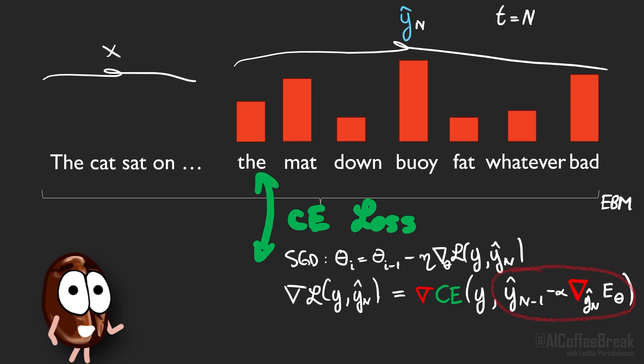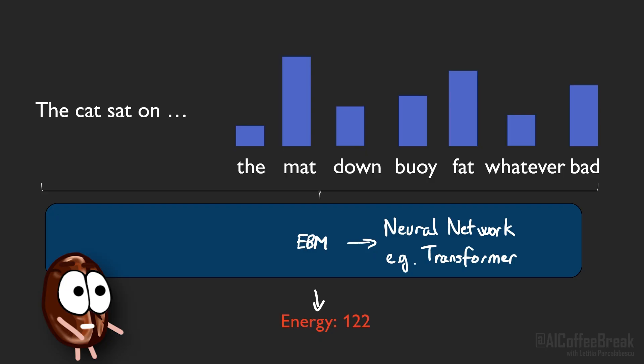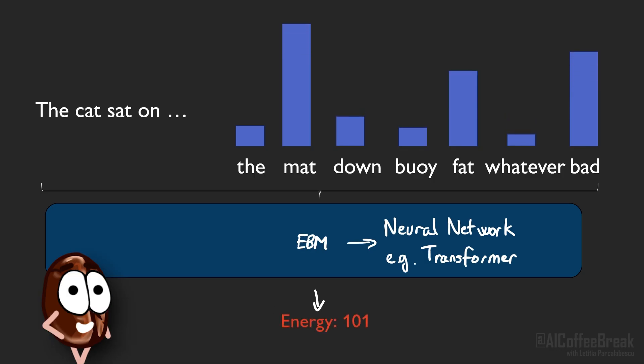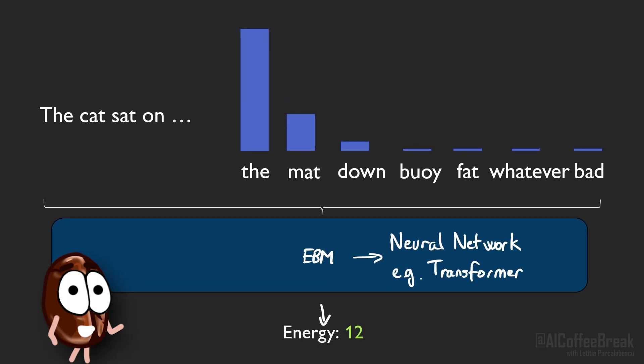During inference, things change. You no longer have the ground truth y — instead, you only have the context x. The model starts with one or more random guesses for the next token distribution, and each guess gets refined step by step by minimizing the energy, until the energy cannot be lowered anymore or for a predetermined number of steps. Doing it flexibly has a very human-like flavor: when a problem is easy, the model needs only a couple of refinement steps, and when the problem is hard, it can spend more computation to get it right.